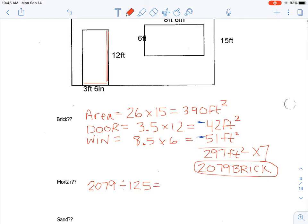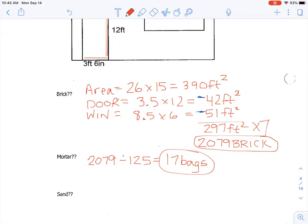I get 16.632, but we know that we can't buy part of a bag, so we're going to round this up—always rounding up when you talk about material—so we need 17 bags of mortar.